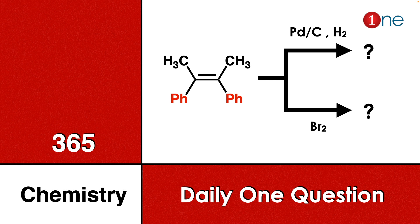Welcome to One Chemistry. This is the 365 Chemistry Series — one daily question for you. Here, cis-stilbene is given. On one side you have a methylphenyl attachment; the other side also has a methylphenyl attachment, and the methyl and phenyl groups are cis to each other. You are reacting it with palladium on carbon and hydrogen, and on the other hand, reacting with bromine.